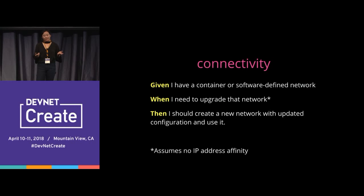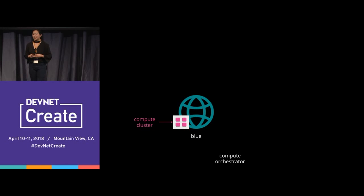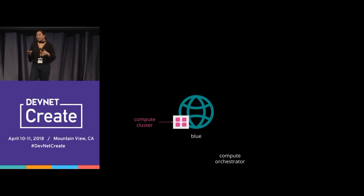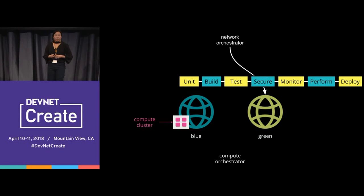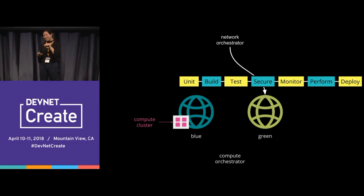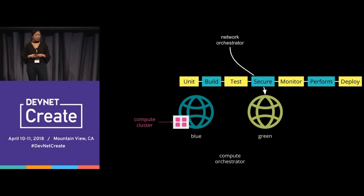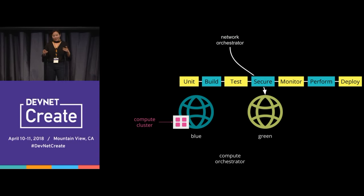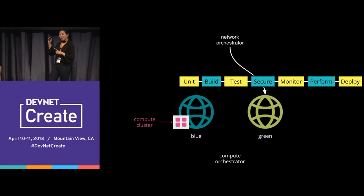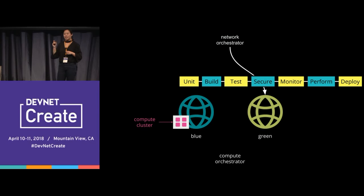We actually did this with a public cloud network. We had a blue network with compute clusters on it and needed to update the underlying configuration. We didn't want to touch the blue network because it had live traffic. So we deployed our green network using our pipeline — unit test, check; build, check; test, check; security, check; monitoring feeding to our network monitoring tool, check; performance, check. Then we hit the deploy stage, where the magic happened. The compute team had its own pipeline to deploy compute clusters through unit tests, build, testing, security, monitoring, and performance stages.